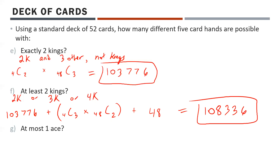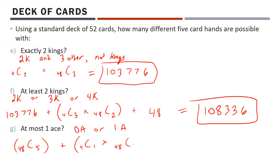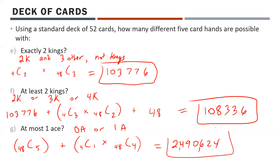Last one: at most one ace. That means zero aces or one ace. Zero aces: ignore all four aces and choose five from the remaining 48 cards — 48C5. One ace: choose one from four aces — 4C1 — times four from the 48 other cards — 48C4. Adding those together gives 2,490,624.